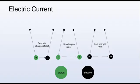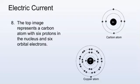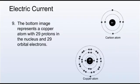Similar to magnetic polarity, like-charged particles repel one another, and opposite charged particles attract each other. The top image represents a carbon atom with six protons in the nucleus and six orbital electrons. The bottom image represents a copper atom with 29 protons in the nucleus and 29 orbital electrons.